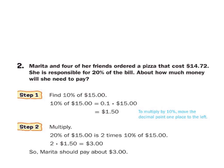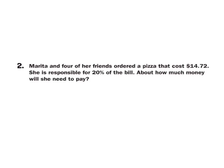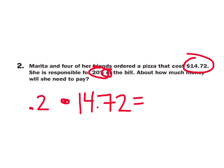So you guys will notice they have these word problems as well, which most of you love and enjoy. Okay, so let's look at this one. Marita and four of her friends ordered a pizza that cost $14.72, but she's only going to pay 20% of the bill. About how much money will she need to pay? Well, notice it's 20% of $14.72, so 20% as decimal is 0.2. 0.2 multiplied by $14.72. So how much did she pay? $2.94. Very good, $2.94.